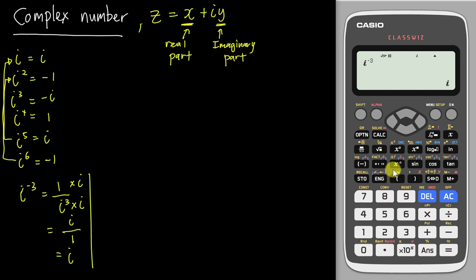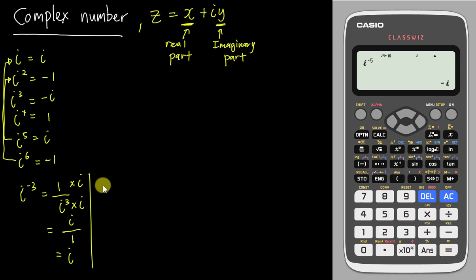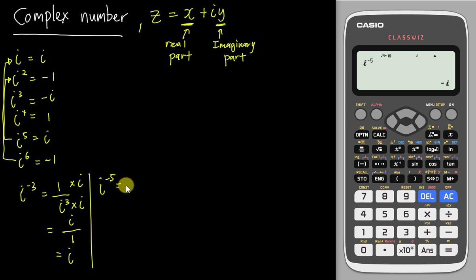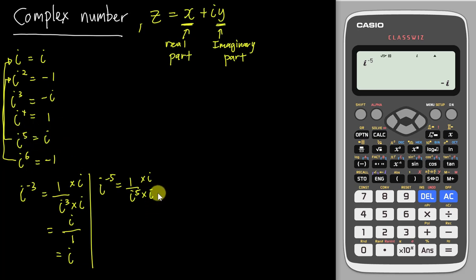Similarly, if we have i to the power of negative five, the calculator says negative i. That is one over i to the power of five. We multiply numerator and denominator by i. i to the power of six gives negative one, and i divided by negative one is negative i. That's what happens when the power is negative.